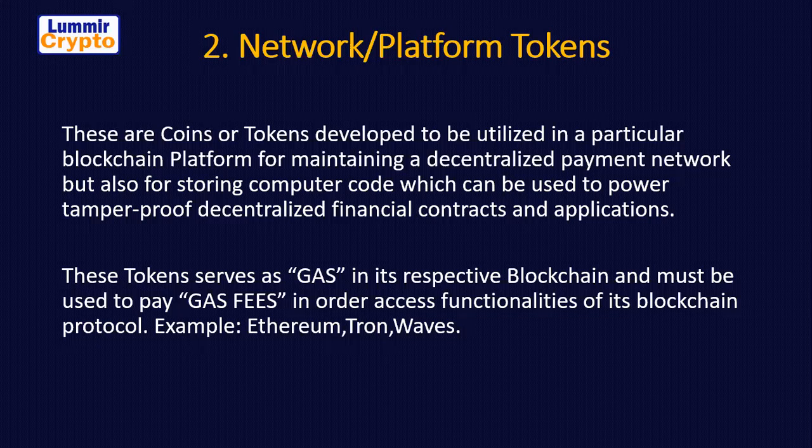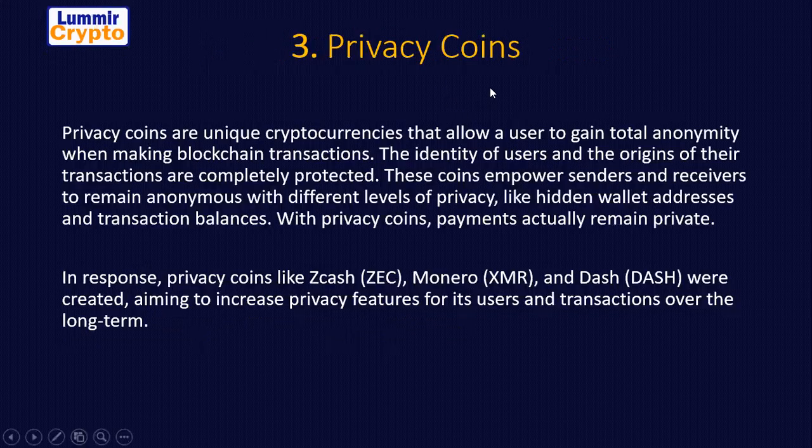Coins in the category of network or platform tokens include Ethereum, Tron, and Moons, to mention a few. You can easily search on Google to get more lists. That is the second classification of digital assets.